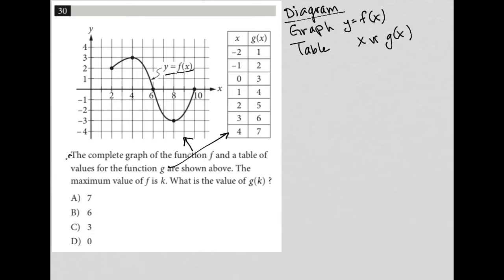The maximum value of f is k. So where is the maximum value of f? Well, it's right here. That is the maximum value of f. And if that maximum value is equal to k, then the max value here is three. That's as high up as the f graph or curve goes. So k equals three.